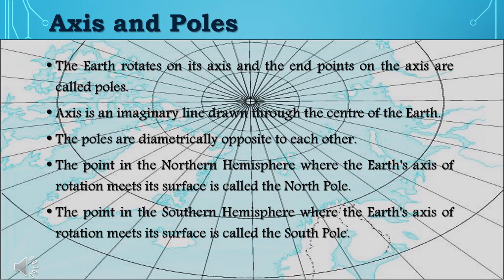Axis and poles: The earth rotates on its axis and the end points on the axis are called poles. Axis is an imaginary line drawn through the centre of the earth. The poles are diametrically opposite to each other.